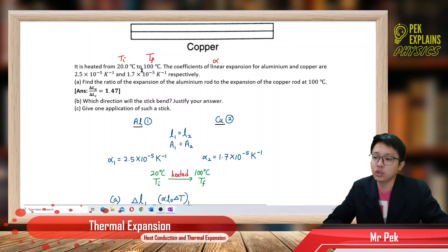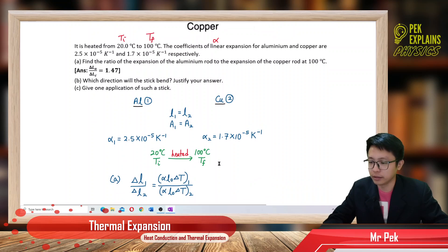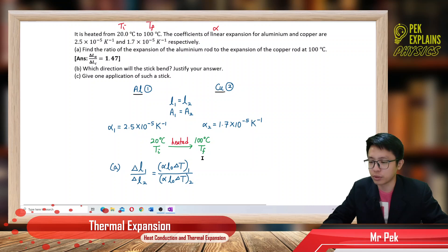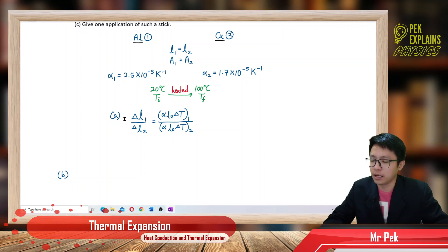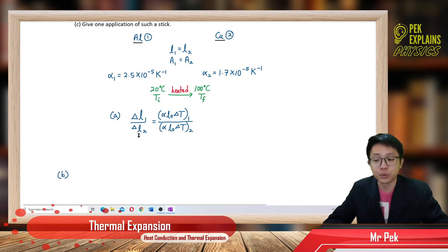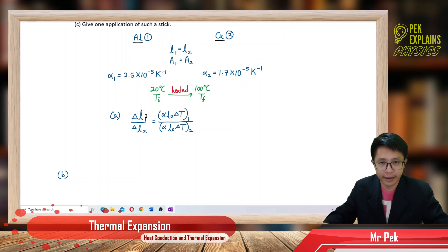Heated from 20 to 100 — initial temperature is 20, final is 100. I want to find the expansion for both rods and then find the ratio, which means delta L1 over delta L2. I apply the formula for expansion: delta L equals alpha times L0 times delta T.